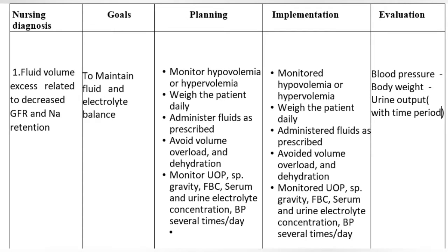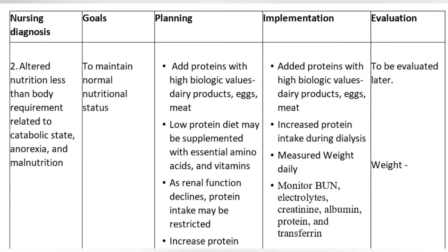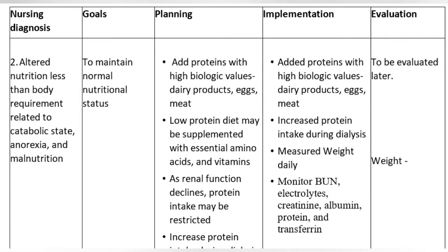Evaluation: Blood pressure, body weight, urine output. Nursing Diagnosis 2: Altered nutrition less than body requirement related to catabolic state, anorexia, and malnutrition.